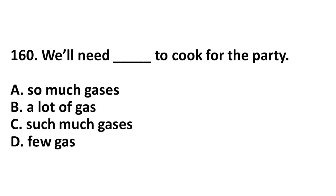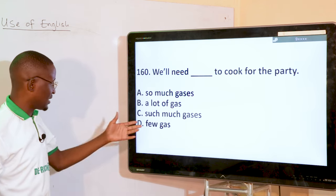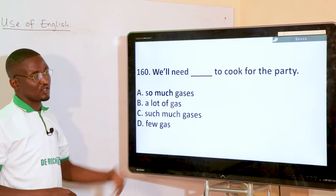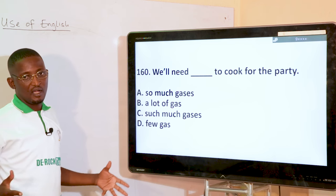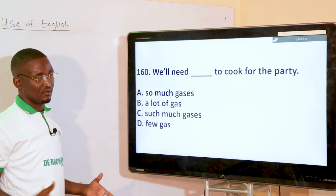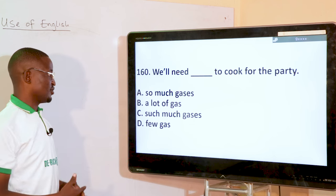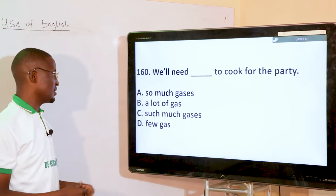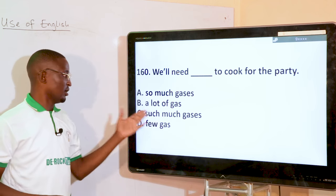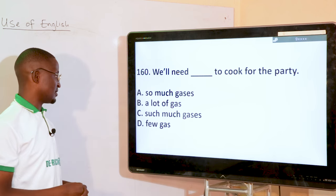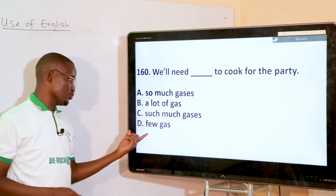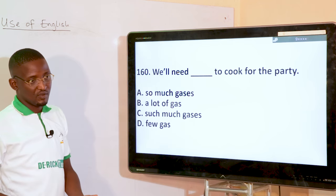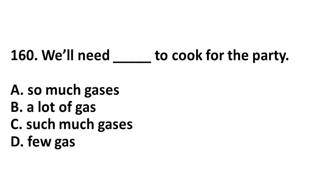We will need dash to cook for the party — so much gases, a lot of gas, such much gases, fuel gas. Gas is an uncountable noun, so you don't count it — the issue of 'gases' will not apply. We will need a lot of gas to cook for the party. We also cannot use 'fuel' because fuel is used for countable nouns.